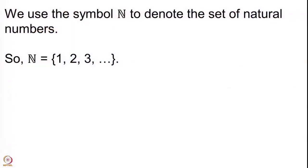Mathematics is all about sets, and what we have said can also be written in mathematical notation as: ℕ is the set consisting of numbers 1, 2, 3, dot dot dot. These dots represent that the numbers go all the way up to infinity — we are counting all the natural numbers in this set.